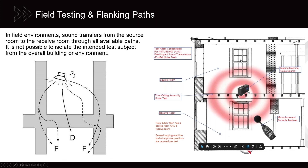For example with a floor-ceiling assembly, if you're testing impact sound transmission but there's a conduit, duct, or path where airborne sound could get around the floor, you could have a very high-performing floor-ceiling assembly but the sound measured in the analyzer is coming through an unintended flanking path.